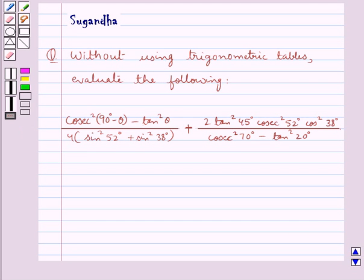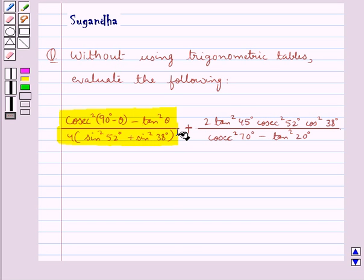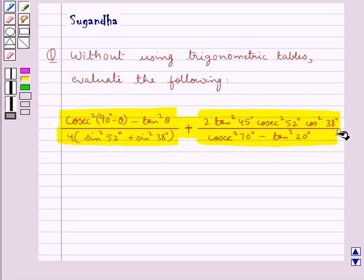Hello and welcome to the session. In this session we discuss the following question: without using trigonometric tables, evaluate cosec²(90° - θ) - tan²θ, all over 4·[sin²52° + sin²38°], plus 2·tan²45°·cosec²52°·cos²38°, all over cosec²70° - tan²20°.